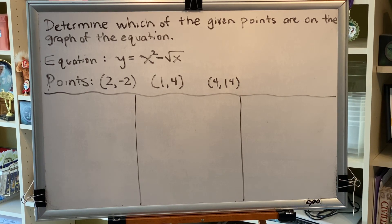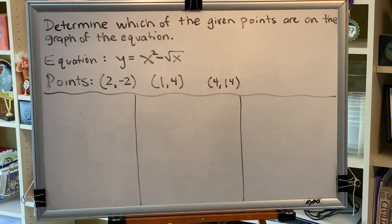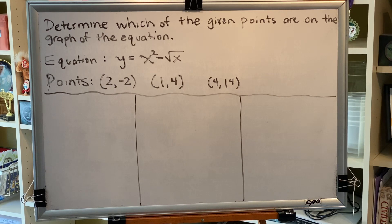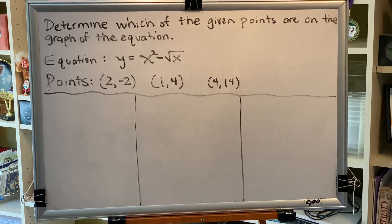The topic of this video is determining whether a point is on the graph of an equation. To determine whether a point is on the graph of an equation, replace each x with the x-coordinate, each y with the y-coordinate, and simplify. If the result is a true statement, called an identity, the point is on the graph. If the result is a false statement, called a contradiction, the point is not on the graph.